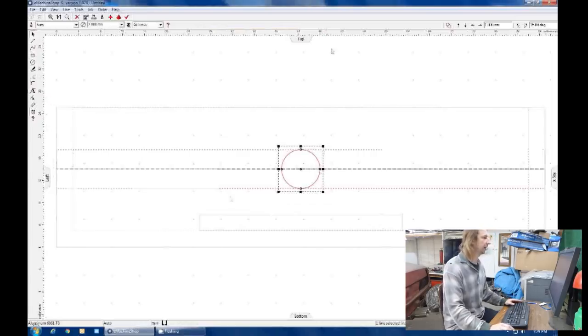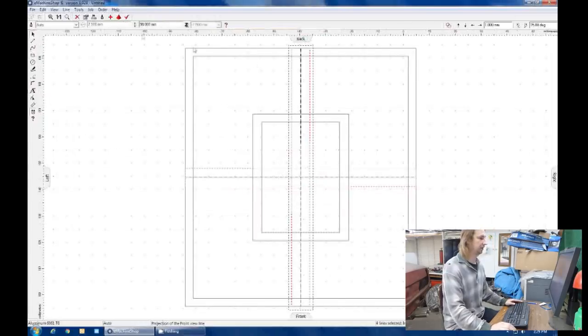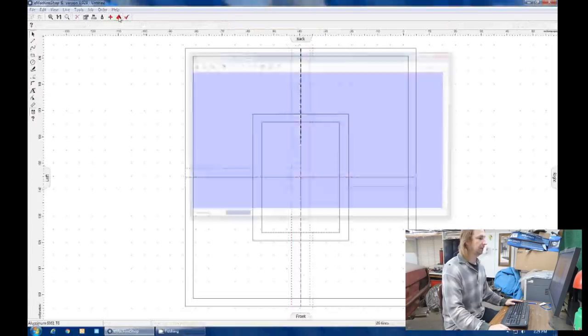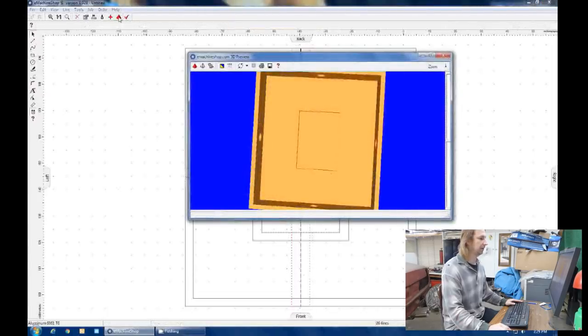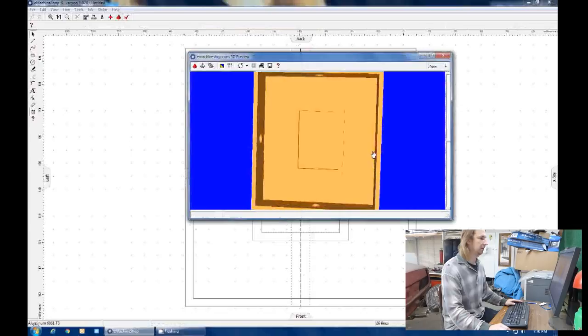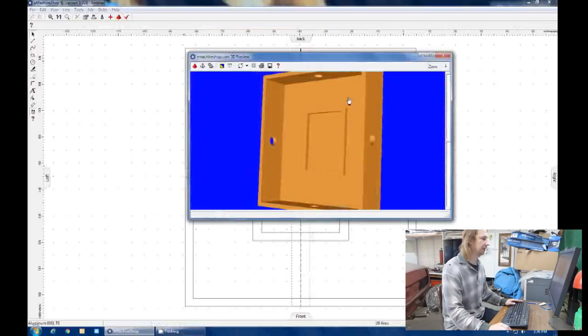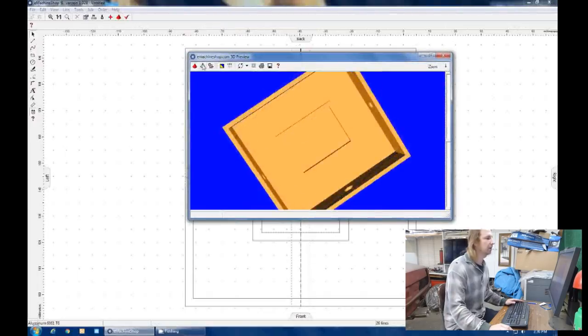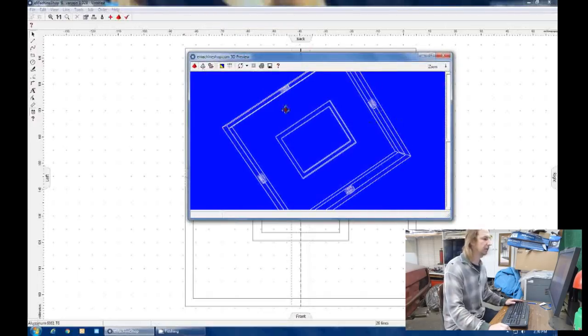And if we render that out, bingo! Here is one fiberglass mold box with four bolt holes which will secure the fiberglass mold and the bump to make the indentation for the coil.